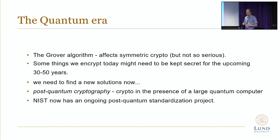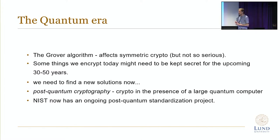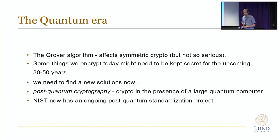For symmetric primitives the problem is not as severe. There is an algorithm called Grover's algorithm, but by simply choosing longer keys we can handle the threat from quantum computers. For public key cryptography, however, it's still a disaster.